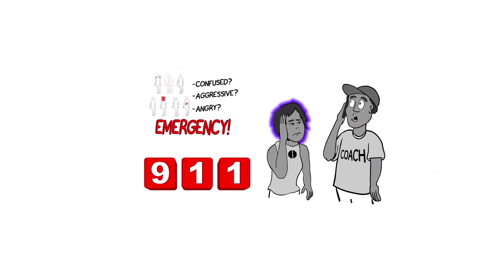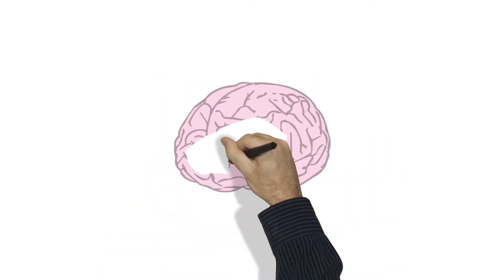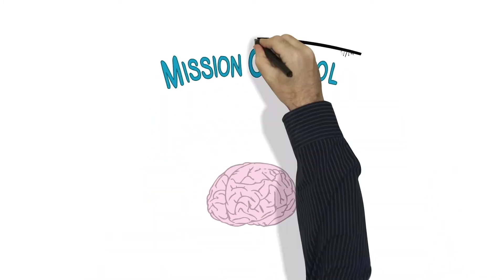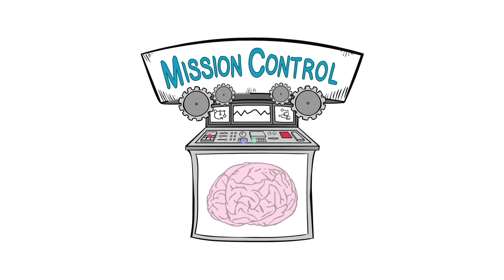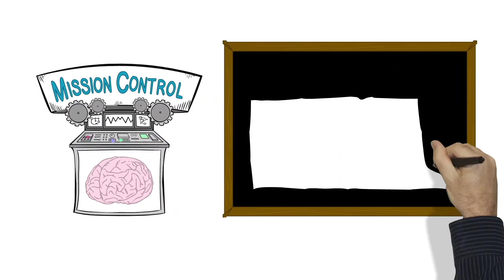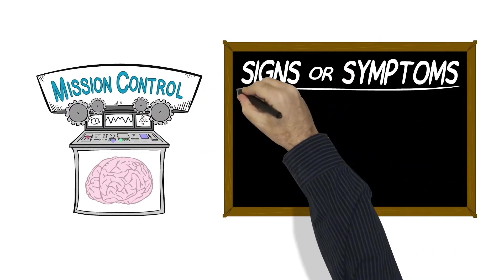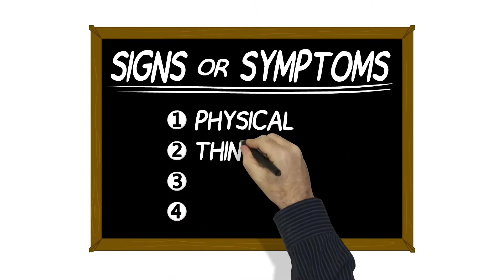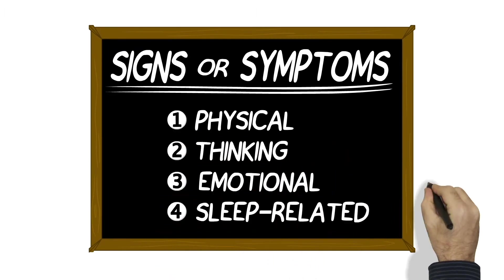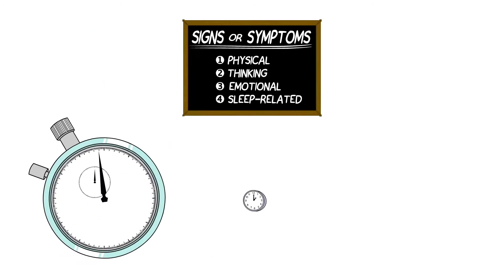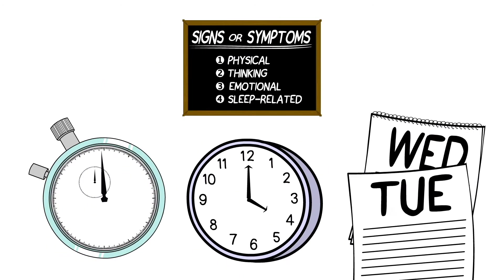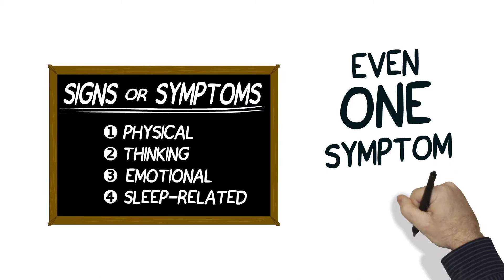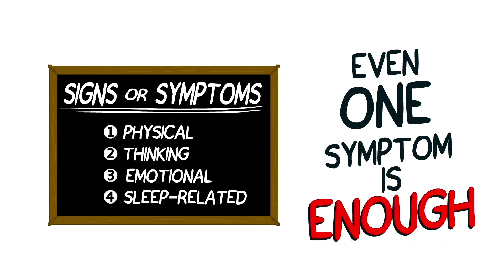The coach uses a cell phone to call for help. Remember, concussions are brain injuries, and the brain controls almost everything we do and how we feel. This means that concussions can cause a number of different signs or symptoms. We usually group these into four categories—physical, thinking, emotional, and sleep-related. They might start right away, or they might take hours or even days to show up. Even if you have only one symptom, you might still have a concussion.